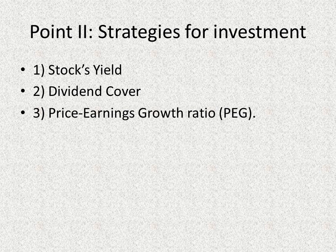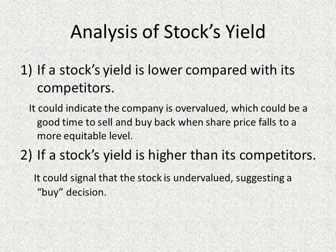Next, we will discuss the second part: the strategy for investment. The strategies we are talking about here are based on the analysis of stock yields, dividend cover, and the price-earnings growth ratio. The first strategy is based on stock yields. If the stock yield is lower compared to its competitors, your strategy is to sell, because it indicates that the company is overvalued.